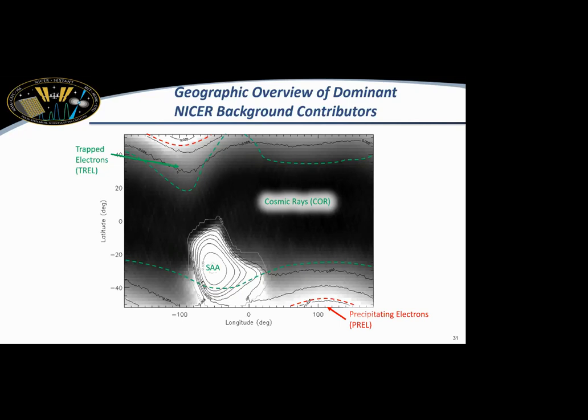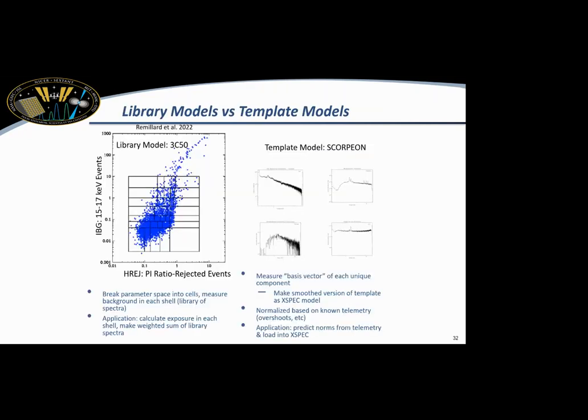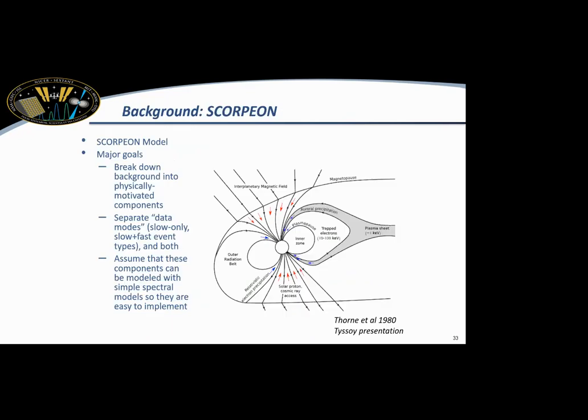So NICER deals with these backgrounds in two ways, as I previously mentioned, actually three, but two for the spectral side of things. And one is using a library model, which is called 3C50, and the other is actually modeling the background and fitting it using Scorpion. So I'm going to start by discussing Scorpion a little bit, then we'll move to 3C50. So Scorpion's whole goal was basically to map out all of these different background components, create a model that accounts for everything appropriately, and then use that model to fit the background rather than trying to subtract it in some way.